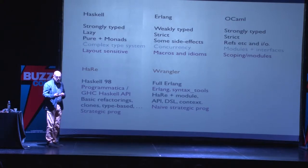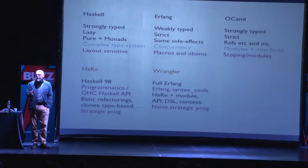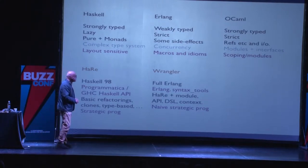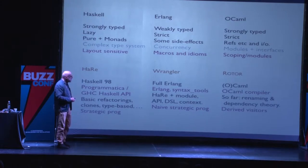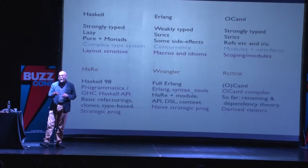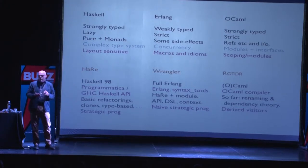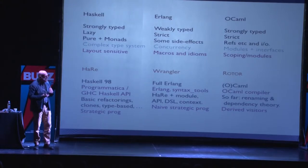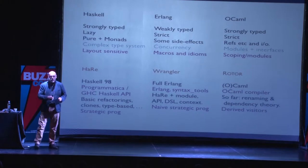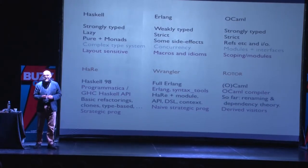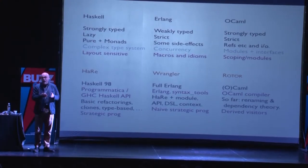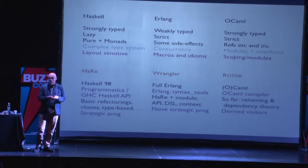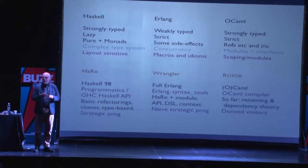With Wrangler, we've been able to tackle a number of things like concurrency. We've looked at how to help users build more complex refactorings by giving them a domain-specific language for putting together simple refactorings into more complex assemblies. With OCaml — this is the work we're doing at the moment — we've particularly focused on building a reliable tool for renaming. That came out of working with Jane Street, a large financial house based in London and New York.